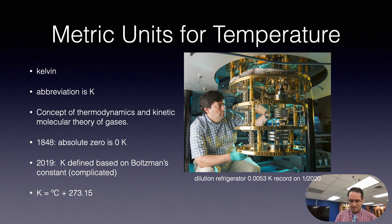Here's a picture of a refrigerator. Different research corporations use these special refrigerators to cool down their quantum computers that need to be at ultra low temperatures. This is the Fermilab dilution refrigerator, and it was able to cool down to 0.0053 Kelvin, and that was recorded on January of 2020. So I just wanted to show you what maybe like an ultra low temperature cooler refrigerator looks like.